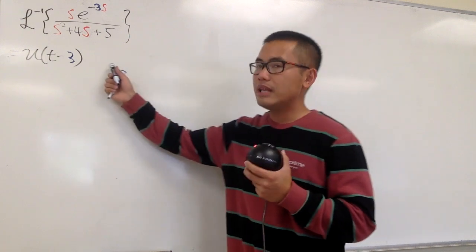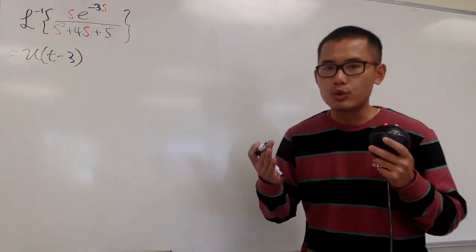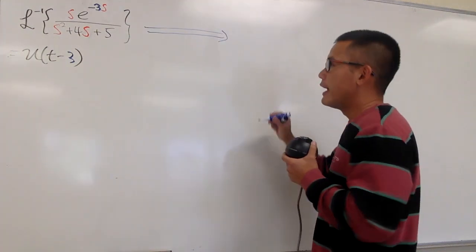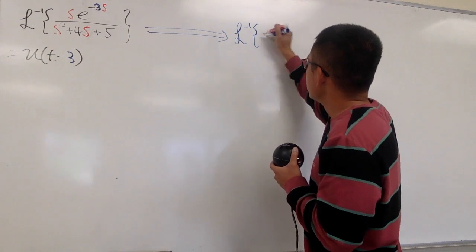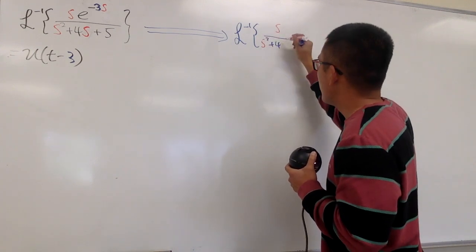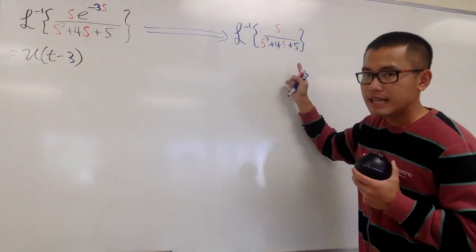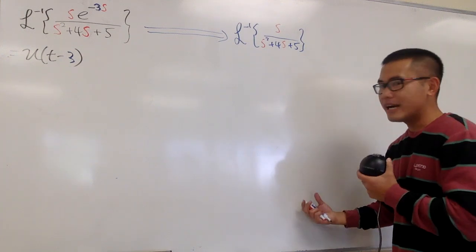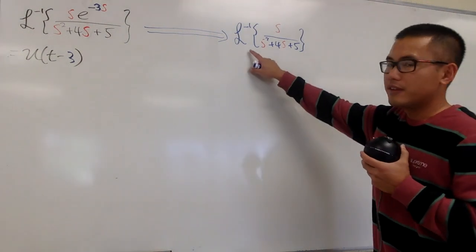The question is: what is f of t minus 3? To answer that, we have to know what f of t is. Here's how I recommend you do it — put this on the side, and write down the inverse Laplace transform of s over s squared plus 4s plus 5, ignoring the e to the negative 3s. When we finish this, it gives us f of t.